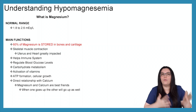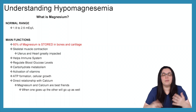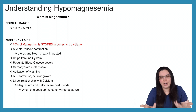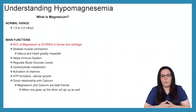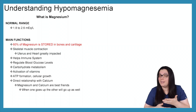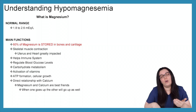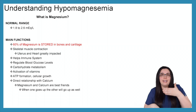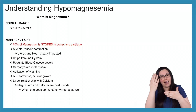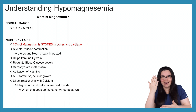Magnesium has a direct relationship with calcium — they are best friends. When one goes up, the other goes up. Whereas magnesium and phosphorus are not best friends — they have an inverse relationship. So if phosphorus is low, calcium and magnesium will go up, and if phosphorus is high, magnesium and calcium will go down.